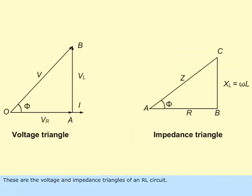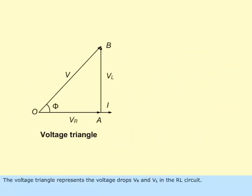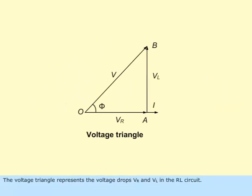These are the voltage and impedance triangles of an RL circuit. The voltage triangle represents the voltage drops VR and VL in the RL circuit.